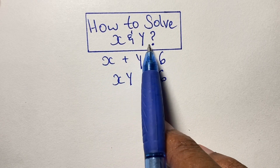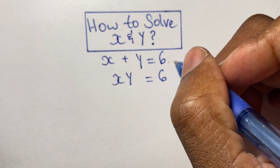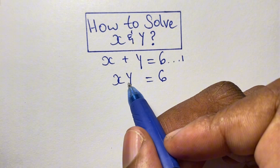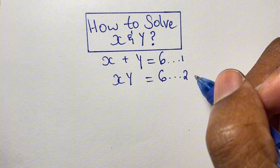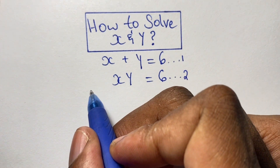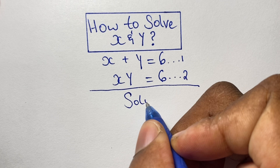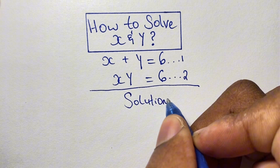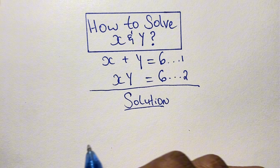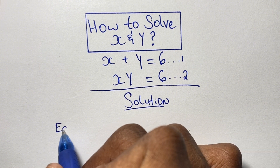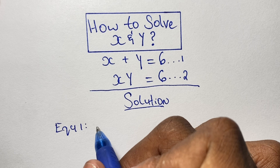Greetings again everyone, welcome back to my channel. Here we have another algebraic simultaneous equation that we are going to solve. In this problem we have x plus y is equal to 6 — that's equation 1 — and equation 2 is x times y is also equal to 6. For some of you looking at these equations, you might be wondering if solving this is even possible. It is possible, and hopefully by the end of this lesson you will learn how to solve problems such as these.